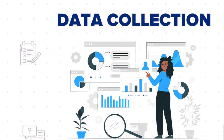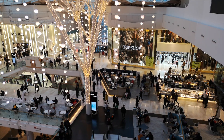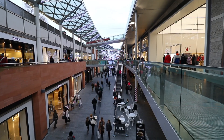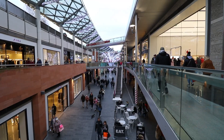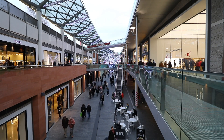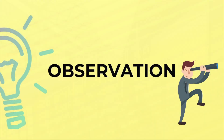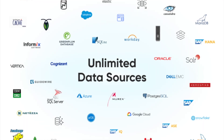Moving on to the collection of data — there are different ways in which we can collect data. For example, at shopping centers, there are sensors at the entrances and exits to calculate foot traffic — how many people are entering at different times of the day. Based on this, they make informed decisions about how many cleaners they need or when to turn off the air conditioning. This is data collected through direct observation using sensors. Other ways include surveys, samples, or data generated automatically by different source systems.